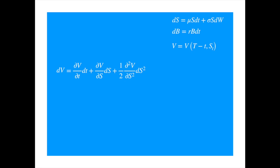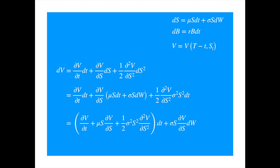We substitute the differential of S, and we know that dS squared is equal to the square of the coefficient of the diffusion term times dt. We combine the dt terms, and we're left with a recognizable SDE, which has a drift term and a stochastic term.